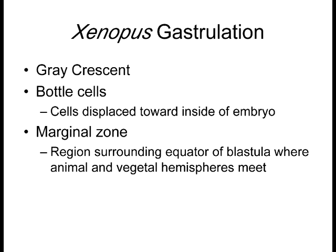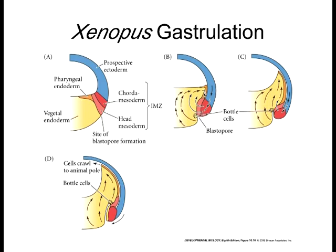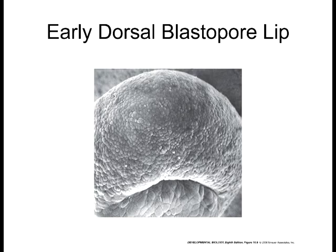Let's talk about Xenopus gastrulation. The gray crescent — that tiny gray area that forms after cortical rotation — is where the first gastrulation movements occur. At this gray crescent, the first thing that happens is that some cells, which we call the bottle cells, begin the involution process. Bottle cells are named because they're elongated in one area and fatter at the bottom, like a bottle. These bottle cells start the involution process, where one set of cells moves underneath another sheet of cells.